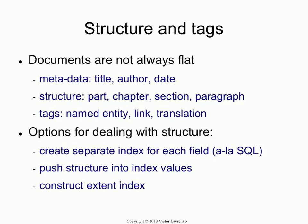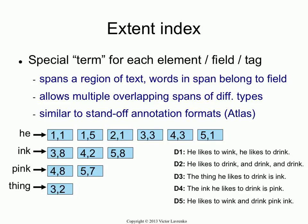The right way to do it is to use an extent index, which is a generalization of a positional index, which we covered on the previous slide. So what's an extent index? The idea of an extent index is you're going to introduce a special new term for each structural element that you want to index. So if you have the author field, you introduce the author term, or the title term, or the named entity term into your index, and then treat it just like every other word. The only thing that's different is this word will overlay on top of some other words, so you can have two terms simultaneously at the same position.